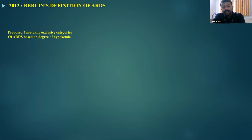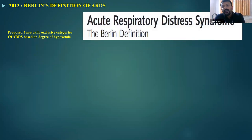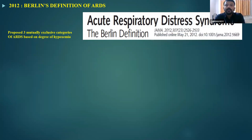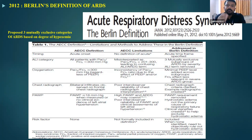A lot of pitfalls happened with the 1992 AECC consensus, so scientists and researchers decided to make modifications and came up with our current definition — the 2012 Berlin definition of ARDS, published in the JAMA journal in 2012. They proposed three mutually exclusive categories of ARDS based on degree of hypoxemia, picking up the limitations of the AECC conference and modifying them.